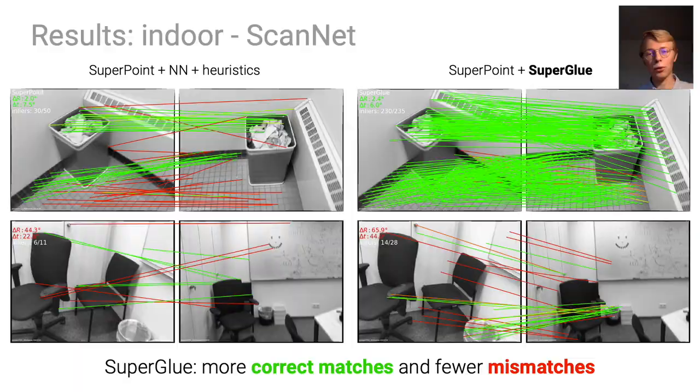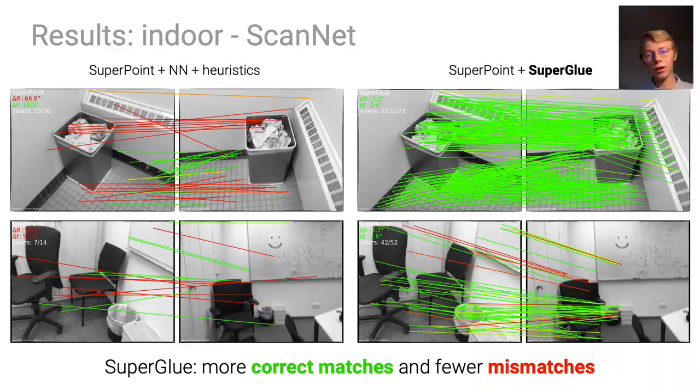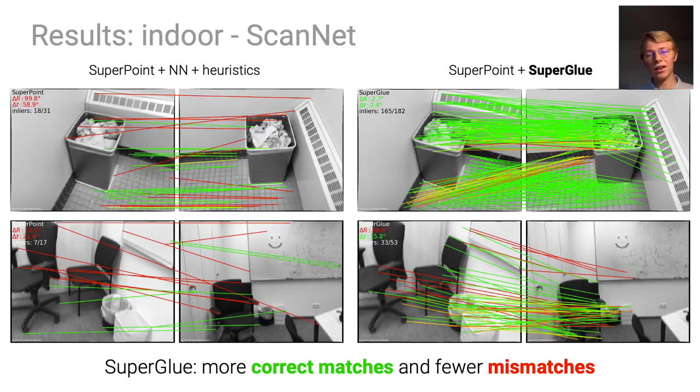We train and deploy SuperGlue in indoor scenes with SuperPoint local features. Our deep network consistently predicts more correct matches in green and fewer mismatches in red than existing classical and learned approaches.